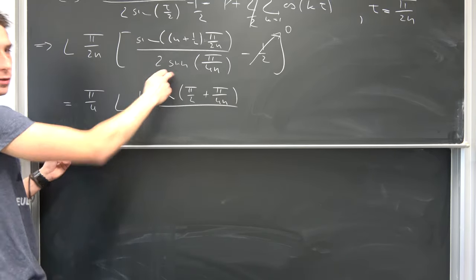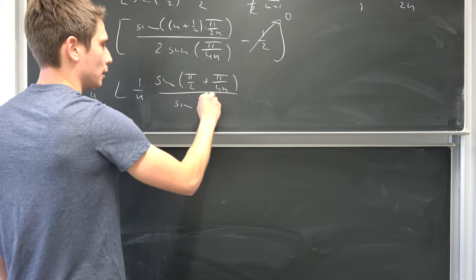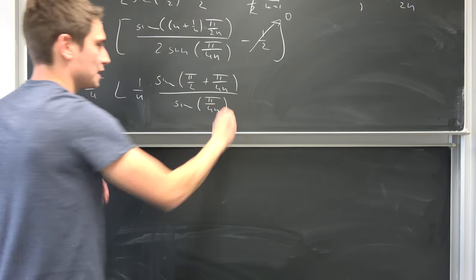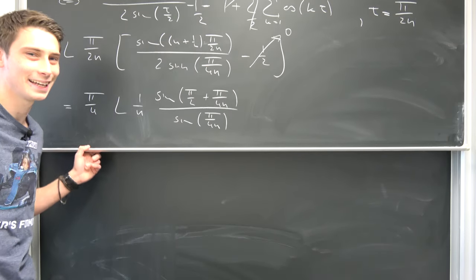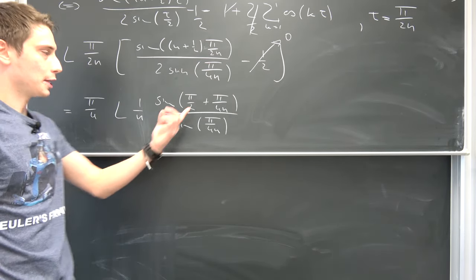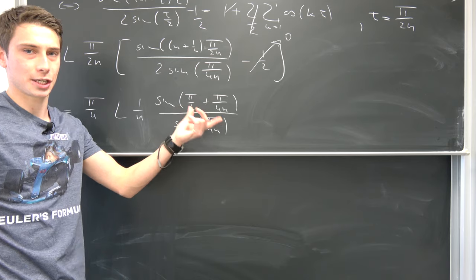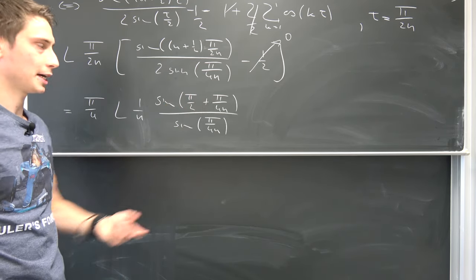Over and now we have sine of pi over 4 times n. And you can interpret this sine right here as just a shifted sine wave basically.